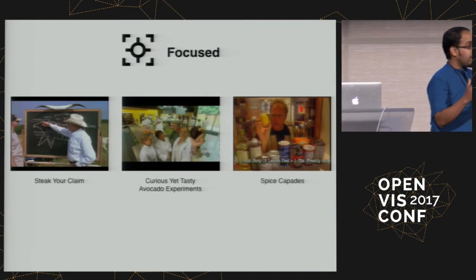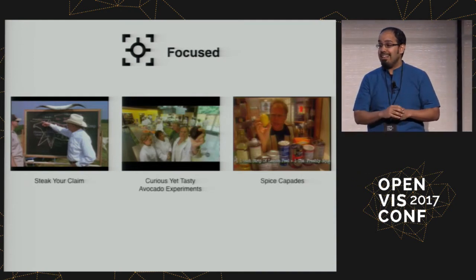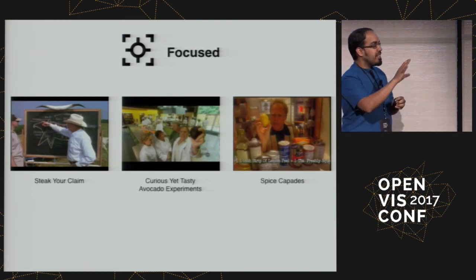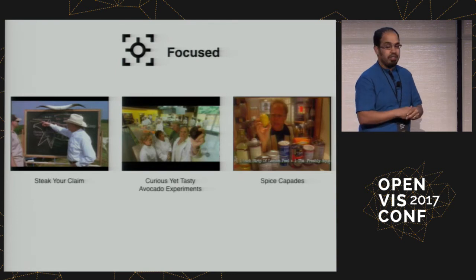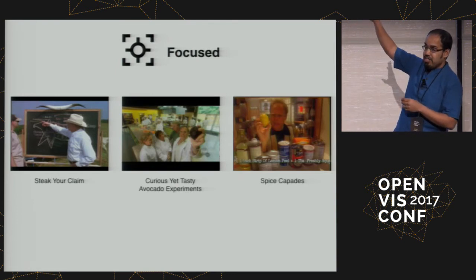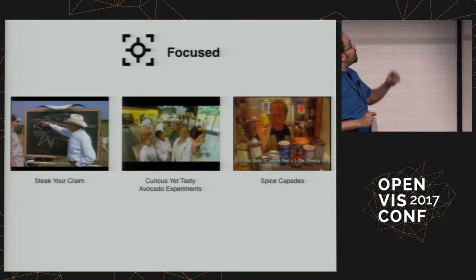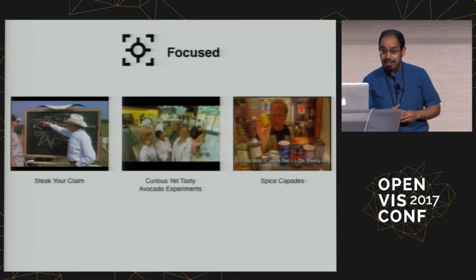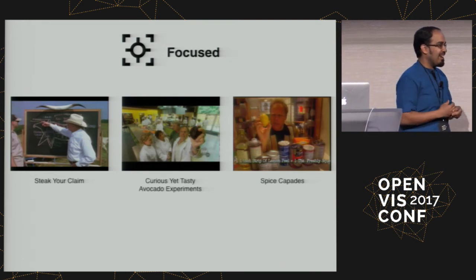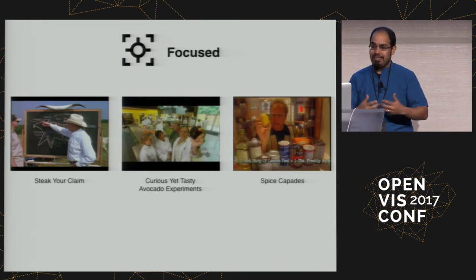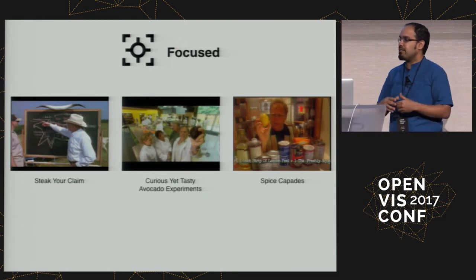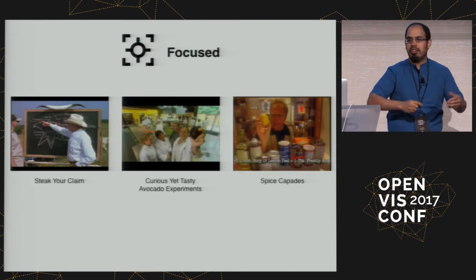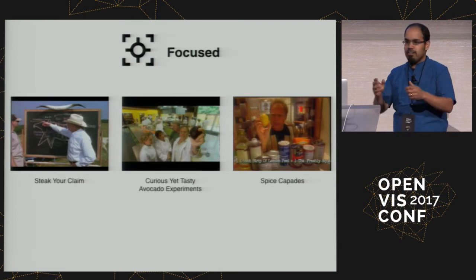So let's run through these principles, thinking about Good Eats as a model. The first principle is focused. Each episode is based on one theme or one ingredient — names like 'Steak Your Claim,' 'Spice Capades,' and curious avocado experiments. We're going to ignore the kitchen sink tools — the tools that do everything — because in our experience, those aren't the ones people actually enter with. People enter by finding some tool that can help them make a visualization, not by opening Excel and trying to generate a company report. That's the kind of population we run into in our workshops.